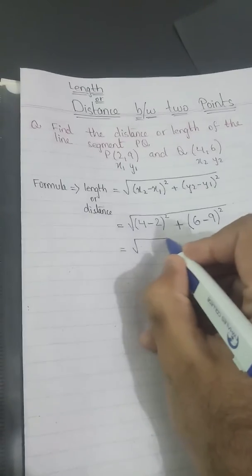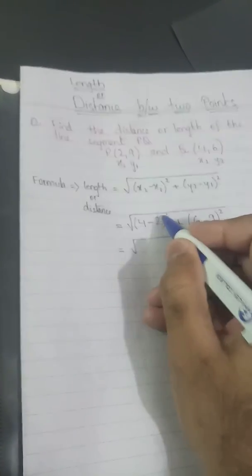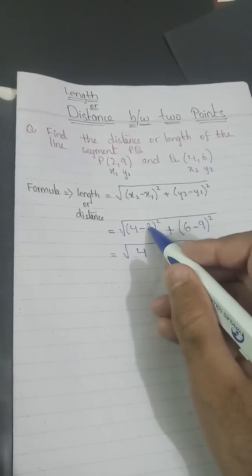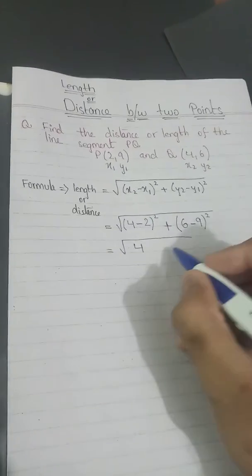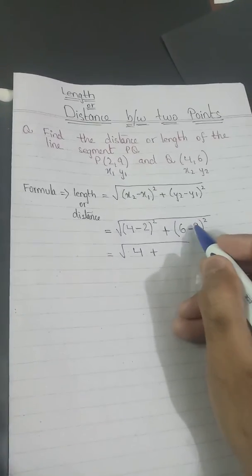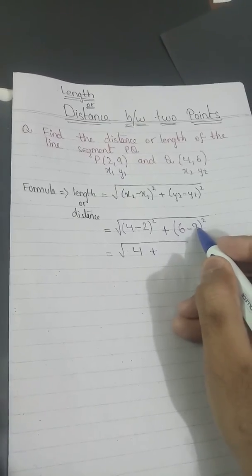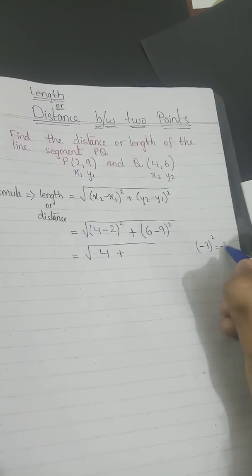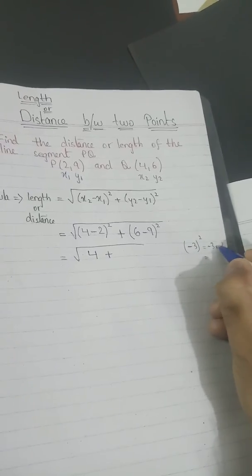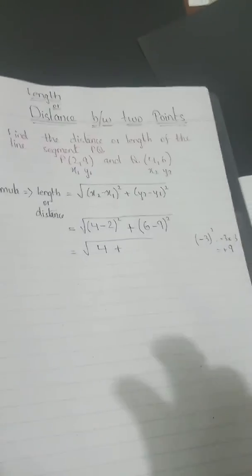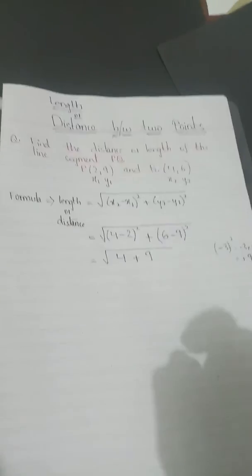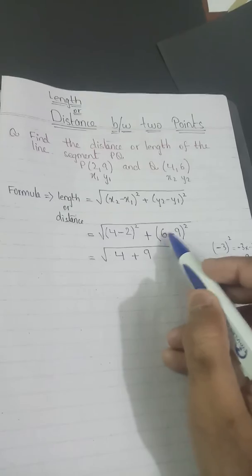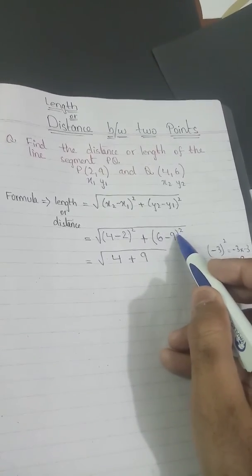In the next step, under the square root sign: 4 minus 2 is 2, and 2 squared is 4, so I write 4. Then a positive sign, and 6 minus 9 is minus 3. Minus 3 squared means multiplying minus 3 by itself: negative times negative is positive, and 3 times 3 is 9, so I write positive 9. So we have square root of 4 plus 9.